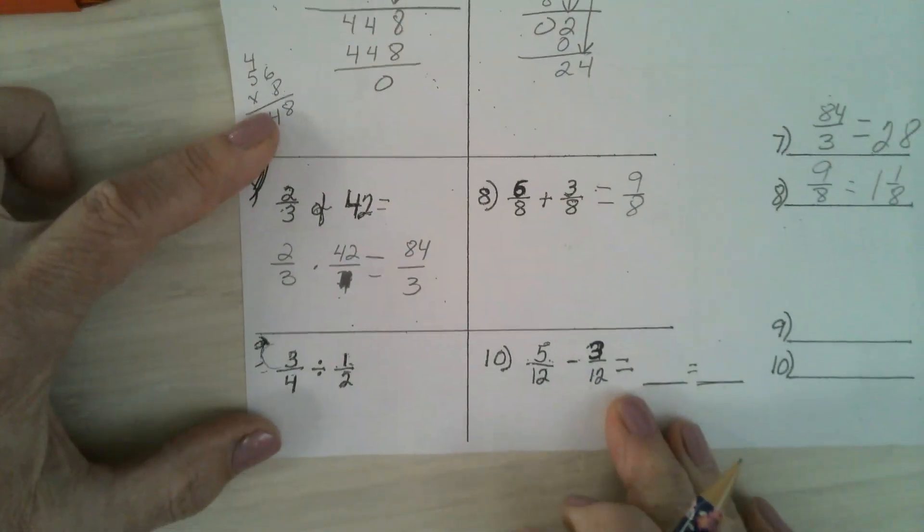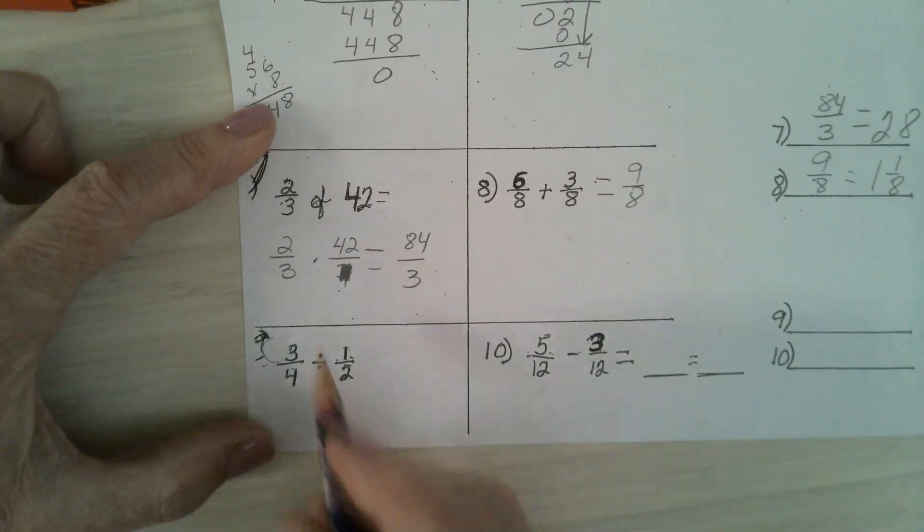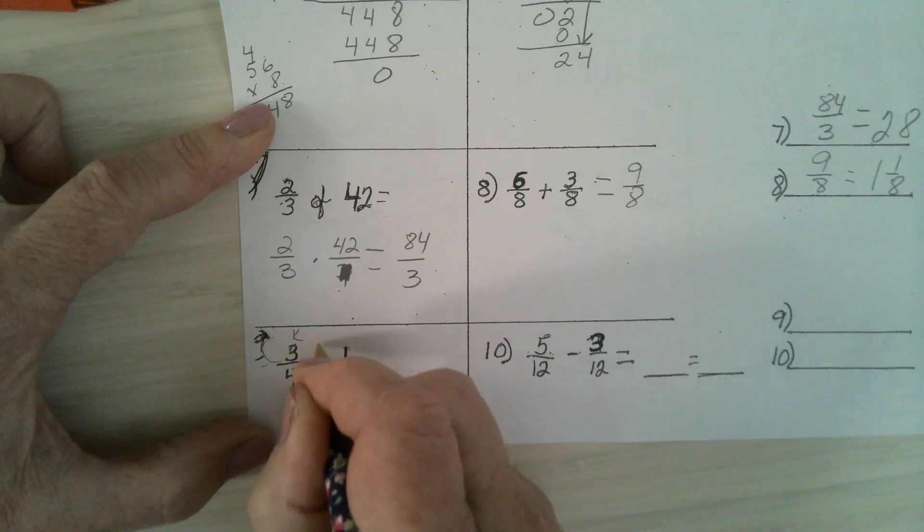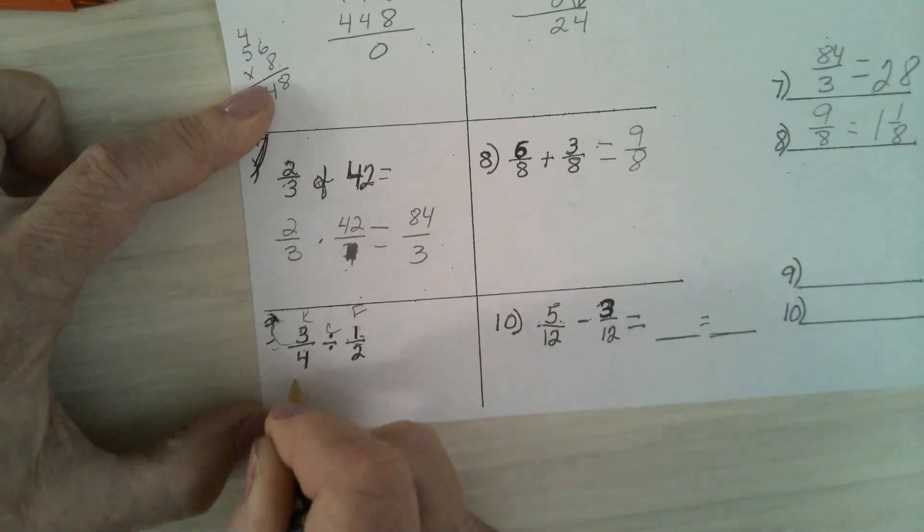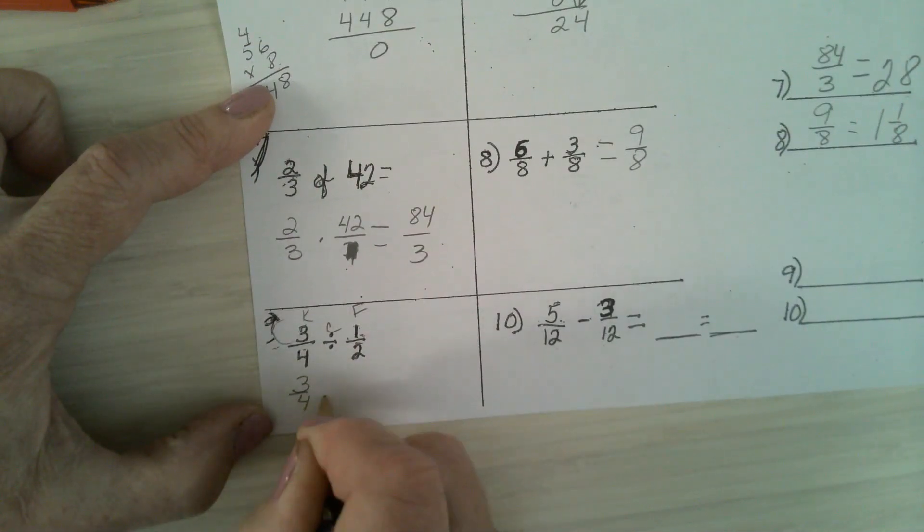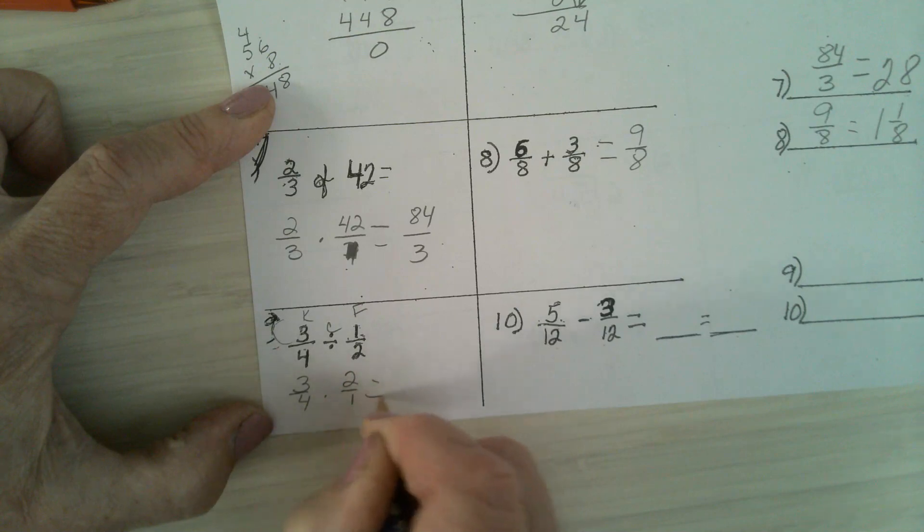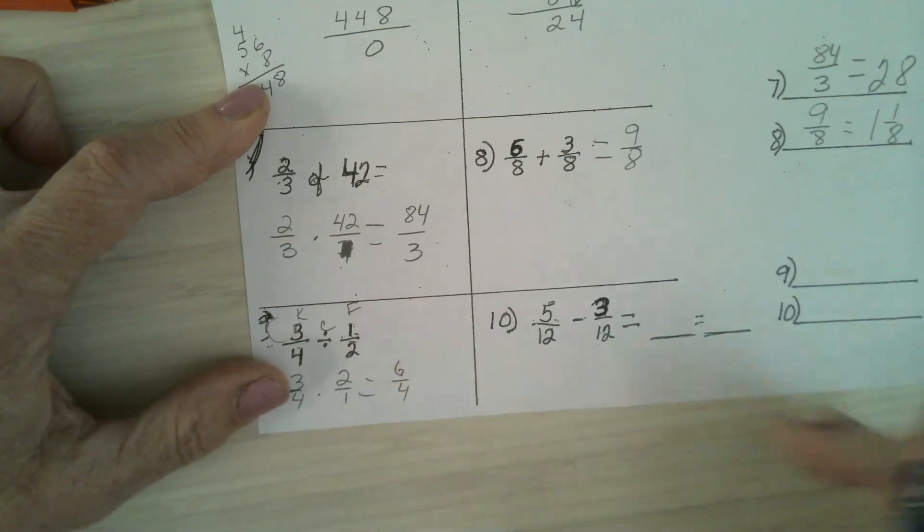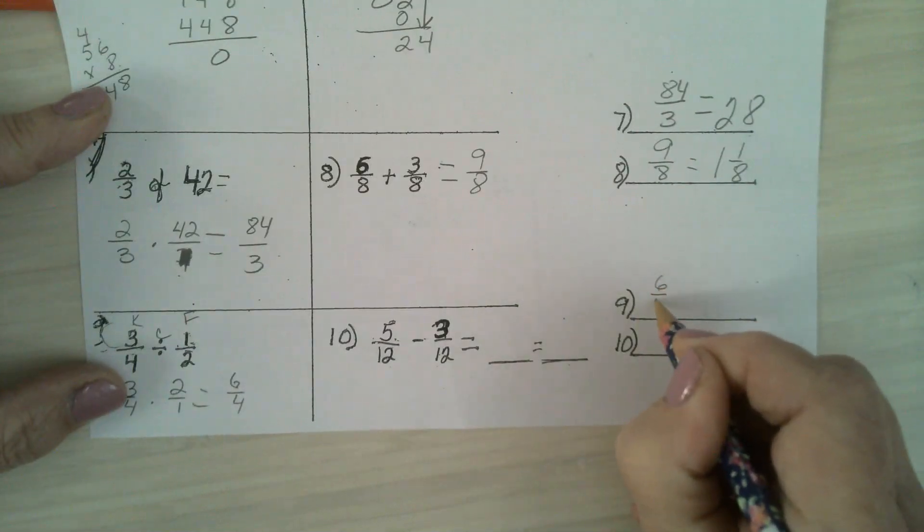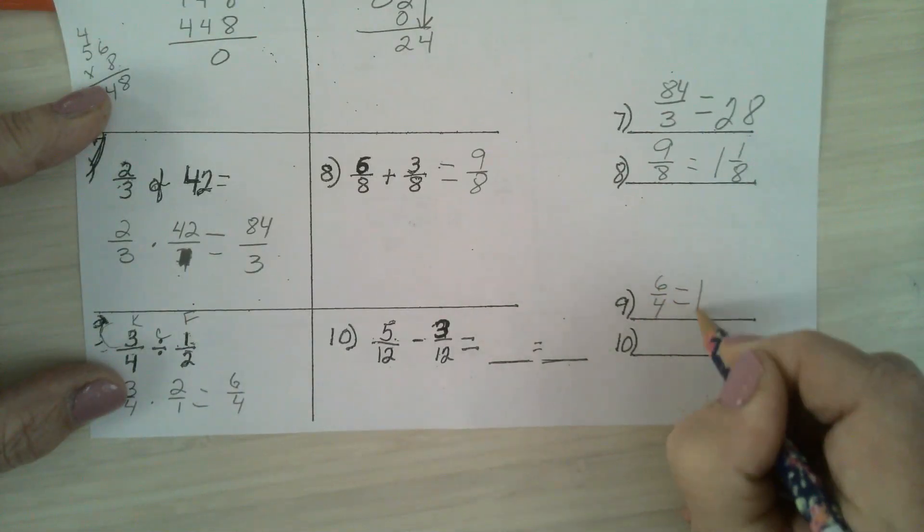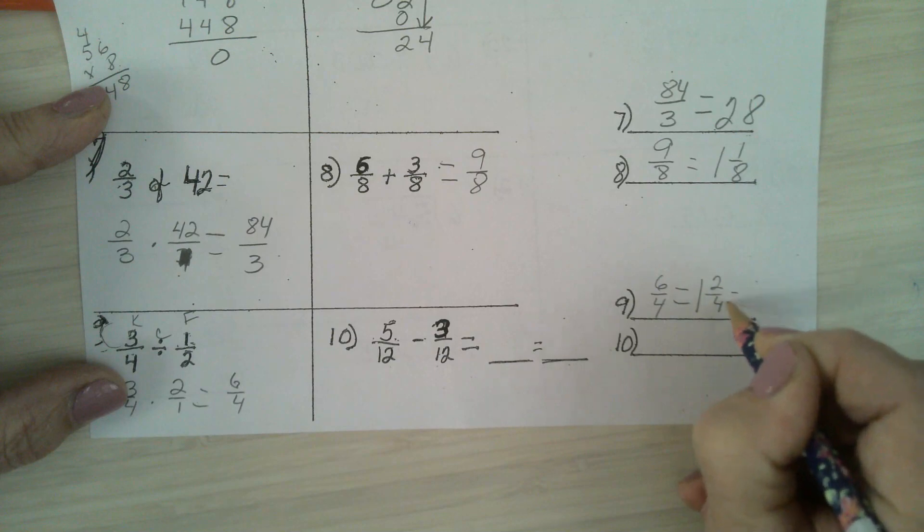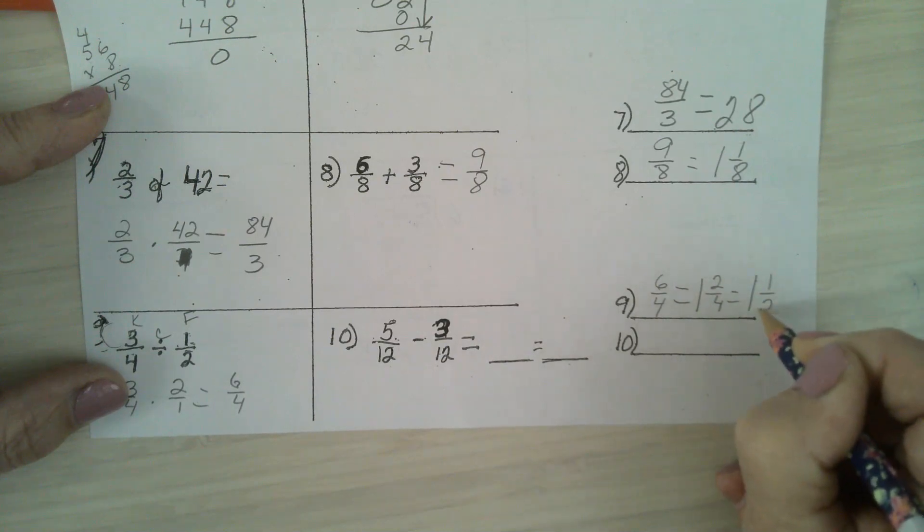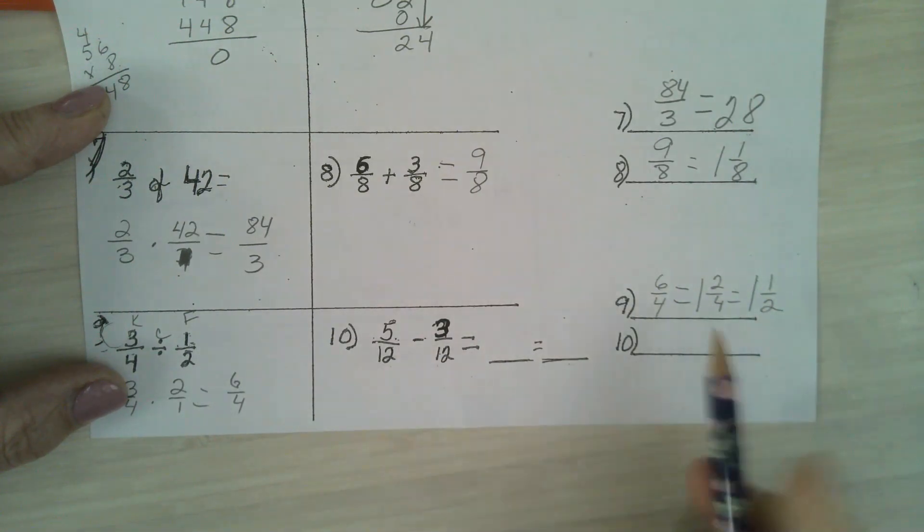In number 9, when you divide fractions, you keep, change, flip. 3/4 times 2/1. 6/4. So you could have 6/4. That would be 1 and 2/4. And the final simplified answer would be 1 and 1/2. If you had any of those answers, I count it correct.